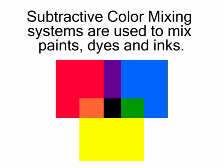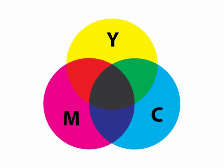Subtractive color mixing is used when dealing with paints, dyes, or inks. Traditionally, the three primary colors in a subtractive system are red, yellow, and blue. Printers have developed particular shades of red and blue which make for very vivid and precise colors when inks are mixed together. This red is called magenta, and the blue is called cyan.